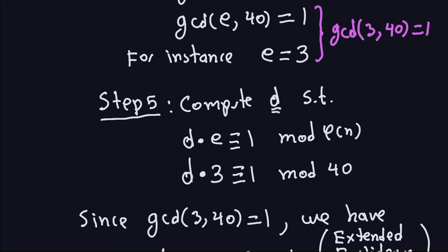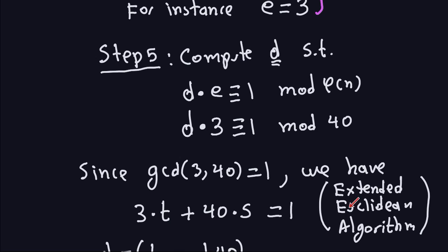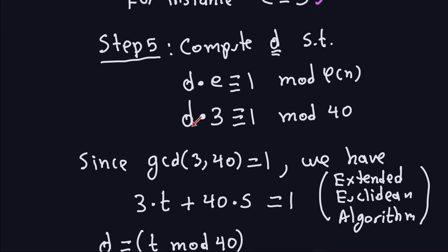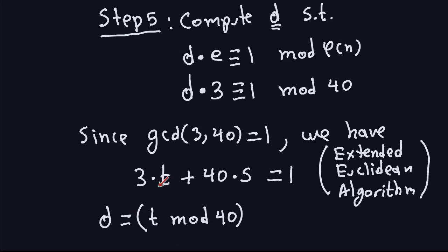The extended Euclidean algorithm lets us express the gcd as a linear combination: 1 = 3*t + 40*s. The private key D will equal the value t modulo 40, because φ(N) = 40.